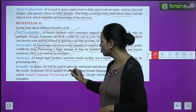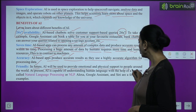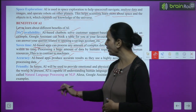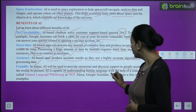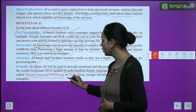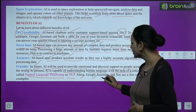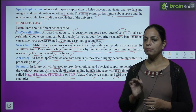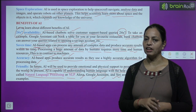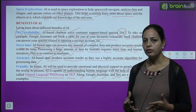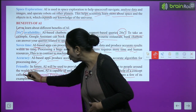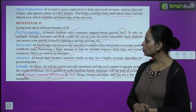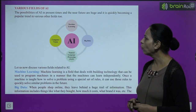Friendly. In future, AI will be used to provide emotional and physical support to people around the world. At present, AI is capable of understanding human language with the help of a concept called Natural Language Processing or NLP — like Alexa, Google Assistant and Siri are a few of its examples. If you have to search something, you can press the mic button on your phone and ask your question without typing. NLP helps the machine understand us, saving our time.